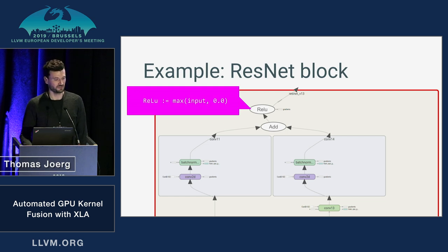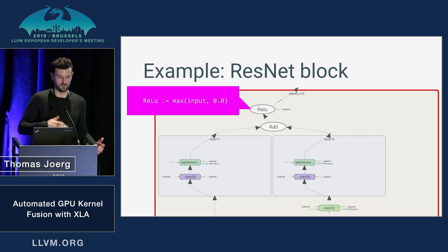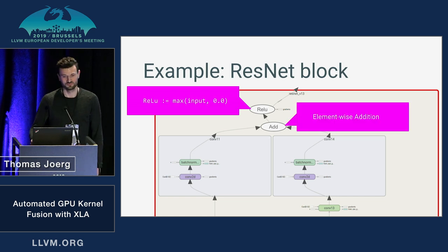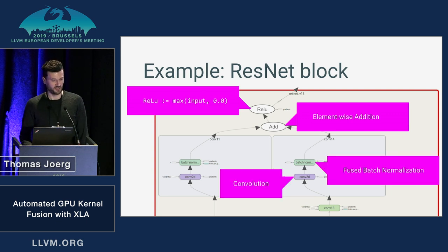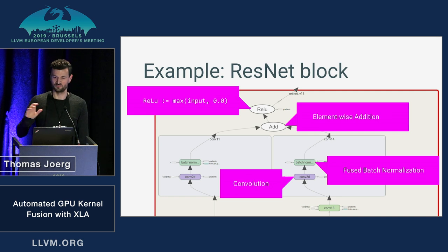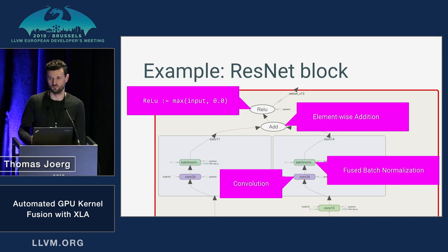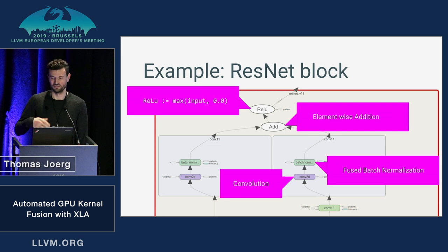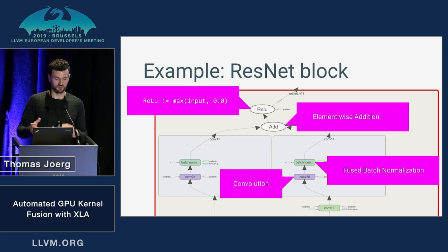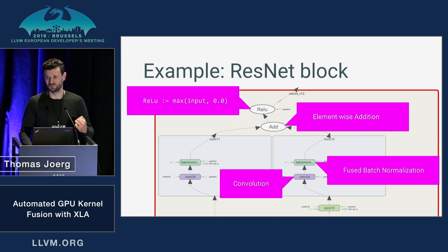If you're a machine learning person, you may know some of these operators. The ReLU is just a fancy machine learning term for maximum of the input or zero. The add is just element-wise addition of two tensors. Convolution is a thing that slides a filter over an input image to find patterns, and batch normalization is a clever trick to speed up model training. If you normalize your input data to have a mean of zero and a variance of one, your models converge faster, and batch normalization does that within your neural network.